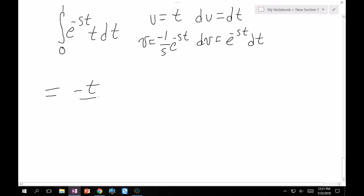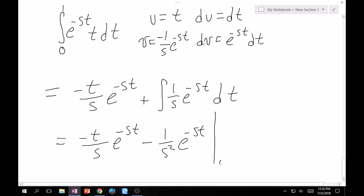Again, the one over s can come outside, and so when you take the antiderivative of this, this minus t over s contribution stays the same because there's no integral on it. And then this part becomes minus one over s squared e to the minus s t. And then you evaluate this whole thing from zero to one.